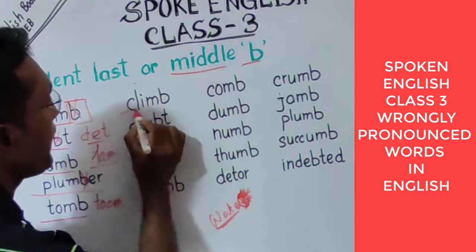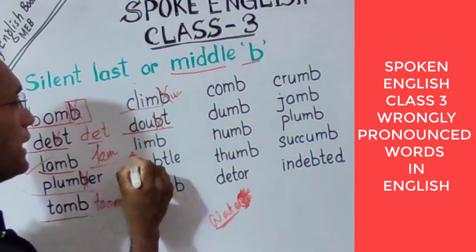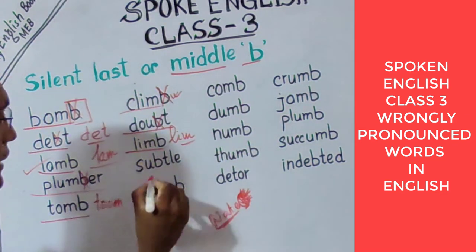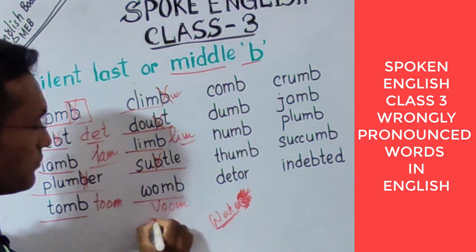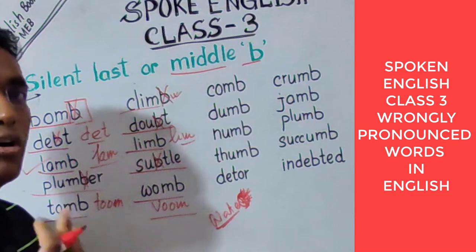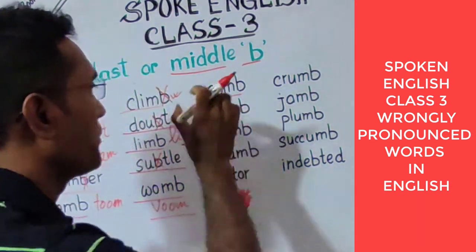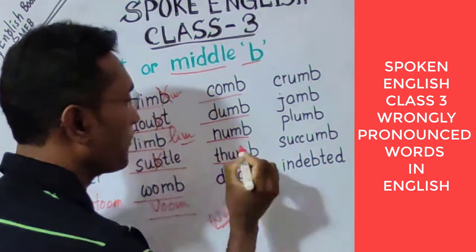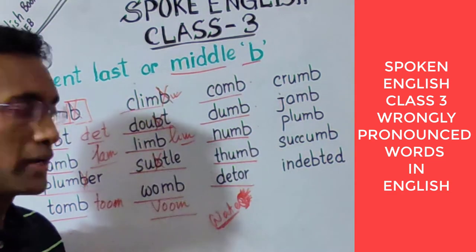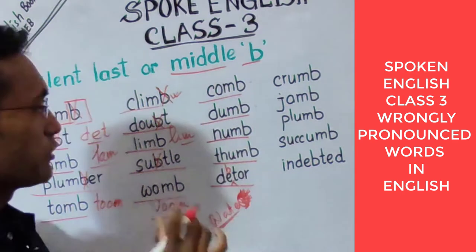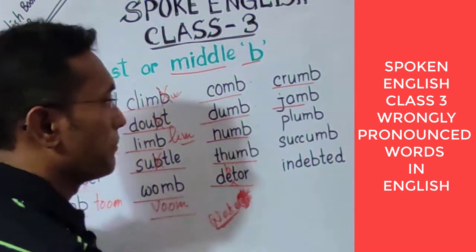Next is 'climb' — B is silent, so it's 'climb.' Also 'doubt' and 'limb.' Then S-U-B-T-L-E: 'subtle.' Next is 'womb' — not 'wom-b,' it's 'womb.' Then 'comb,' which we use to straighten our hair. Also 'dumb,' 'numb,' and 'thumb.' Then D-A-T-A — actually the correct pronunciation is 'debt' — and C-R-U-M-B: 'crumb,' along with 'jam' and 'plum.'